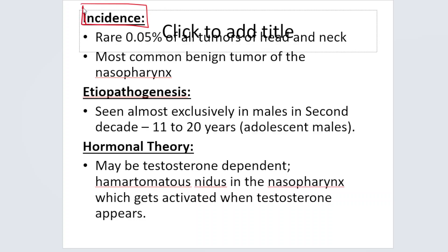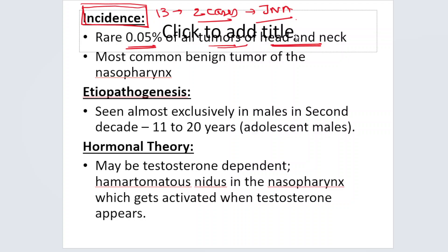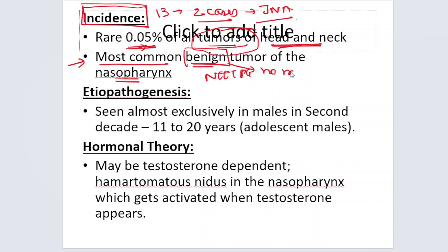The other important clinical importance of the sphenopalatine foramen: it is the most common site of origin of juvenile nasopharyngeal angiofibroma — specifically from the superior margin of the sphenopalatine foramen. Incidence: it is a very rare tumor, forming only 0.05% of all head and neck tumors. Though it is only 0.05%, it is the most common benign tumor of the nasopharynx. Being benign, it will not metastasize — it produces symptoms only by local extension and destruction of adjacent structures.